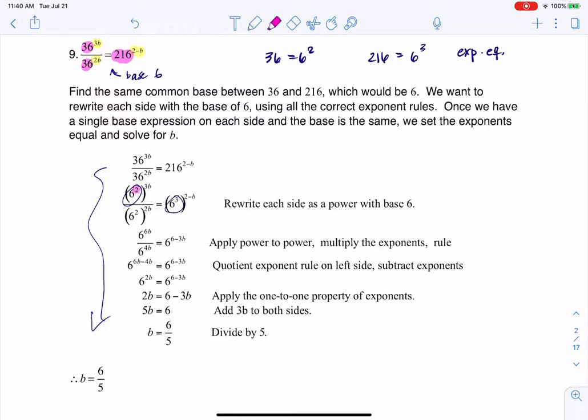And then when you have a power raised to a power, you're going to multiply those exponents. So 2 times 3b is 6b, 2 times 2b is 4b, and 3 times 2 minus b - don't forget to distribute - it's 6 minus 3b.